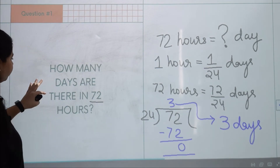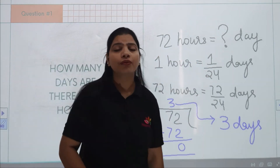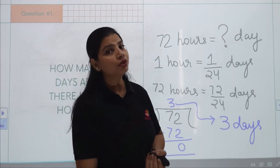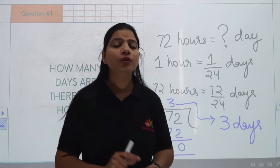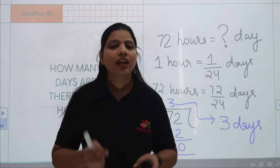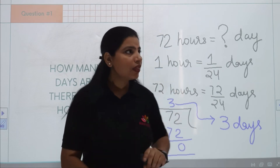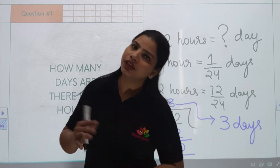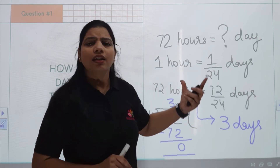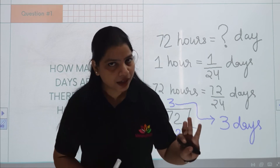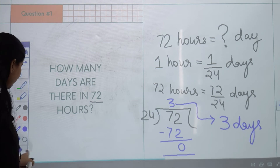How did we do it? We took the total hours — 72 hours — and divided by 24, because 1 hour equals 1 upon 24 days. So for any given number of hours, we simply divide by 24 to get the number of days.